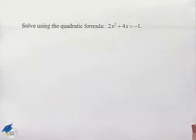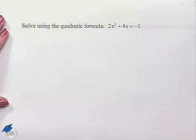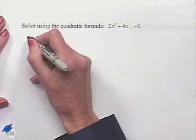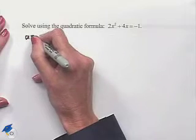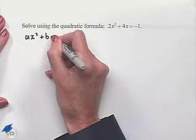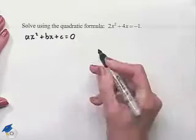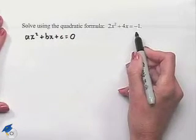Now let's look at solving another quadratic equation. This time we want to solve using the quadratic formula. Our equation is 2x squared plus 4x equals negative 1. In order to use the quadratic formula, we need to have our equation in the format ax squared plus bx plus C equals 0.